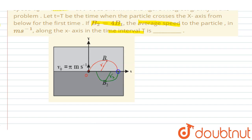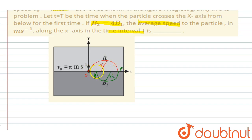Marking points P and Q on the x-axis, the distance covered by the particle along the x-axis equals 2r1 + 2r2.